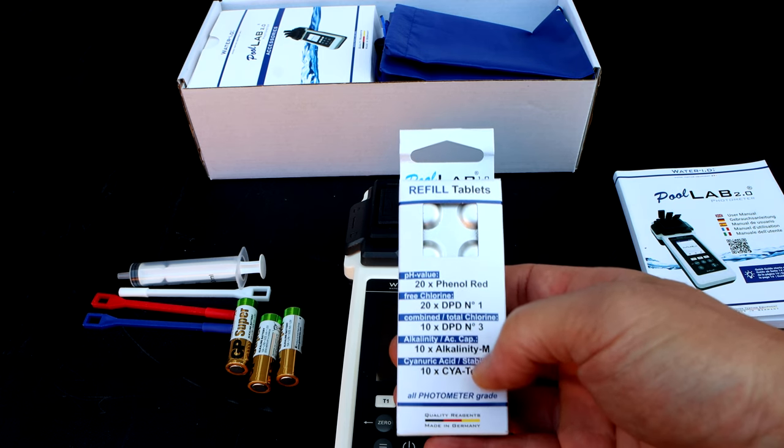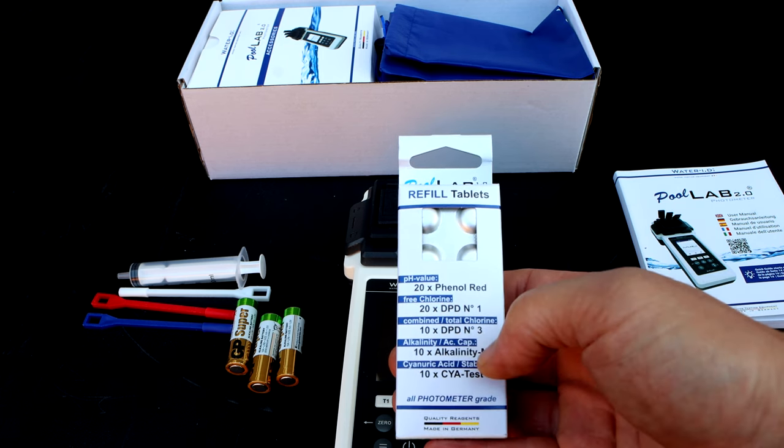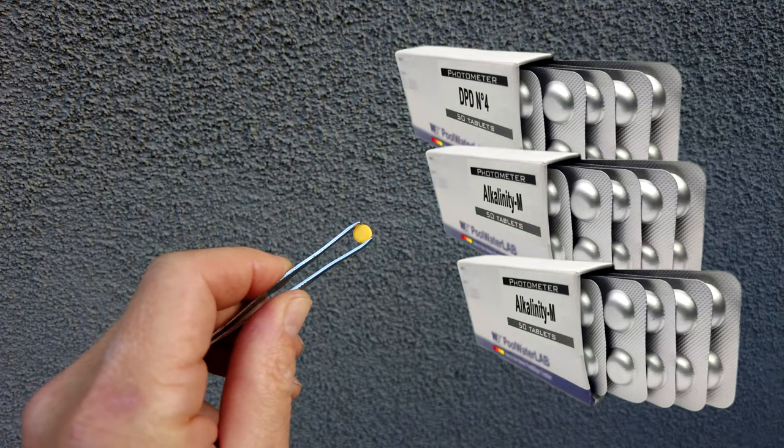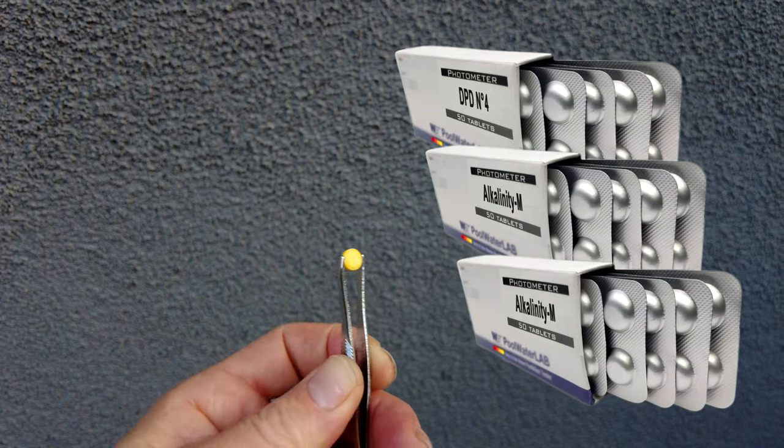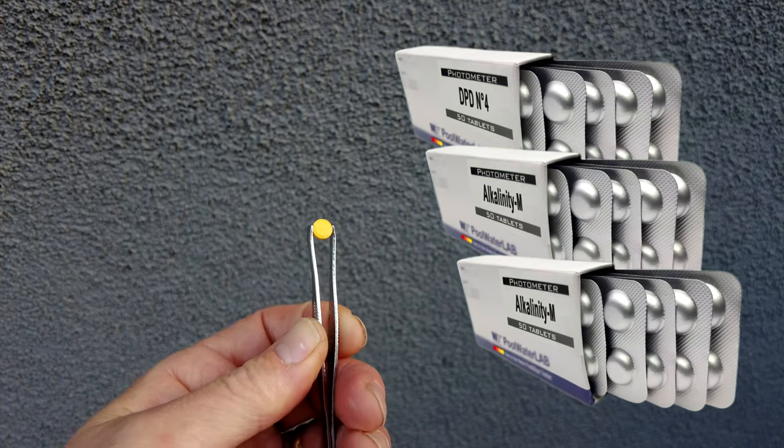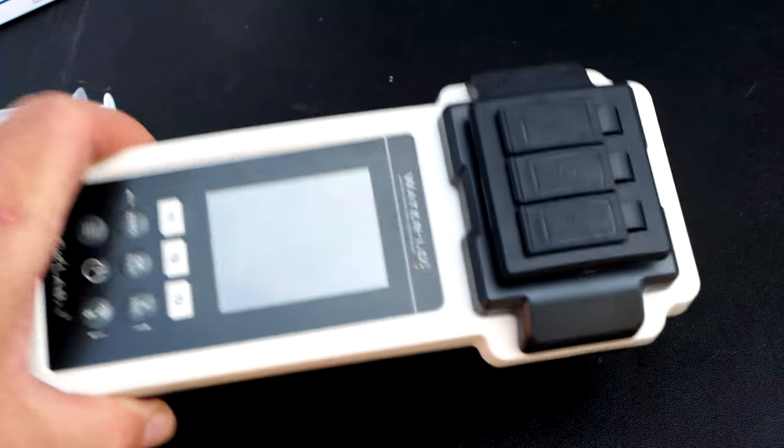The included tablets test for pH, free chlorine, combined chlorine, alkalinity, and cyanuric acid. Most test factors use this tablet which has pre-measured reagent in it, making it one of the most accurate ways to test your pool water.